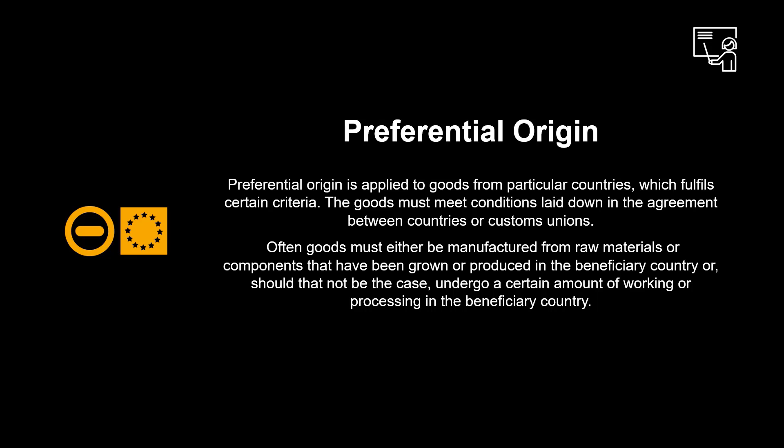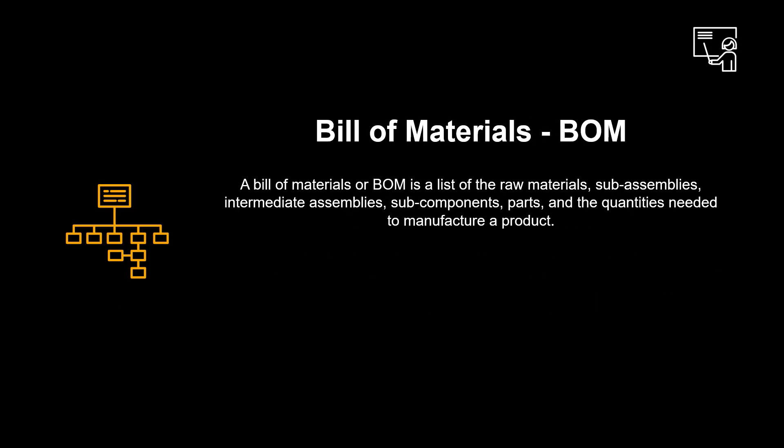Let us clarify some terminology. Preferential origin is applied to goods from particular countries which fulfill certain criteria. The goods must meet conditions laid down in the agreement between countries or customs unions. Often goods must either be manufactured from raw materials or components that have been grown or produced in the beneficiary country, or undergo a certain amount of working or processing in the beneficiary country. A bill of materials, or BOM, is a list of the raw materials, sub-assemblies, intermediate assemblies, subcomponents, parts, and the quantities needed to manufacture a product.